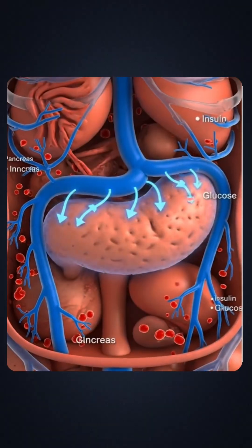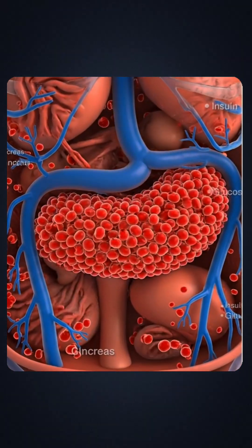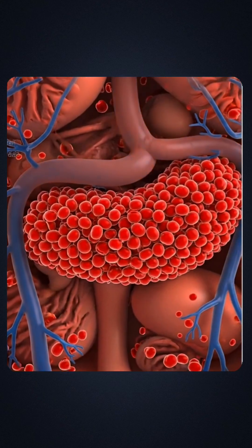Insulin deficiency is seen in the subclass labelled as type 2b. This is more commonly seen in Indians, and we also see that Indians are more lean compared to the western population when we look at type 2 diabetes, due to deficient insulin production in the body.